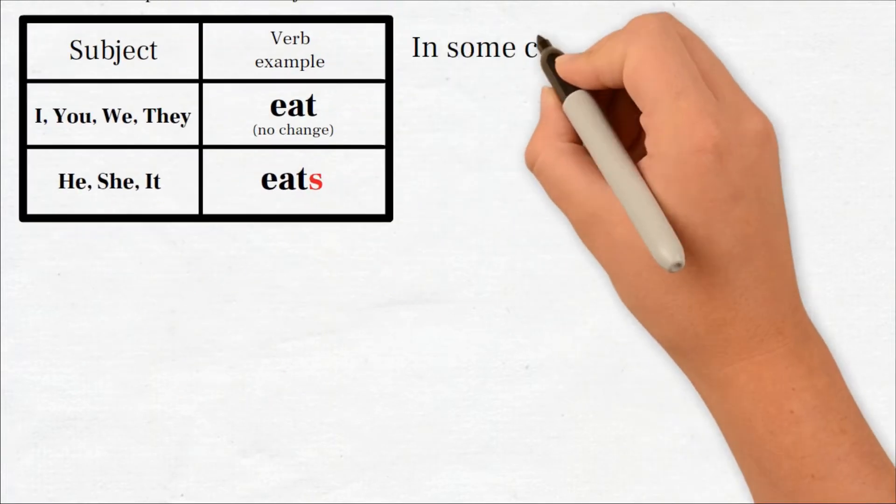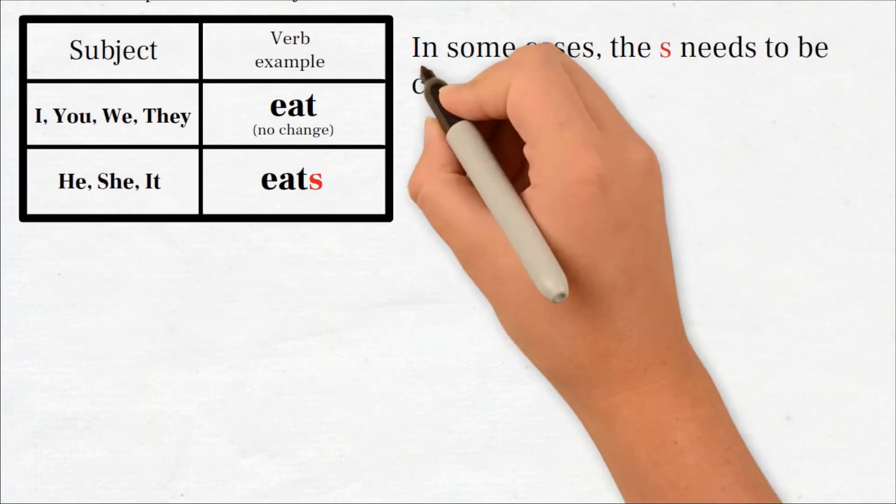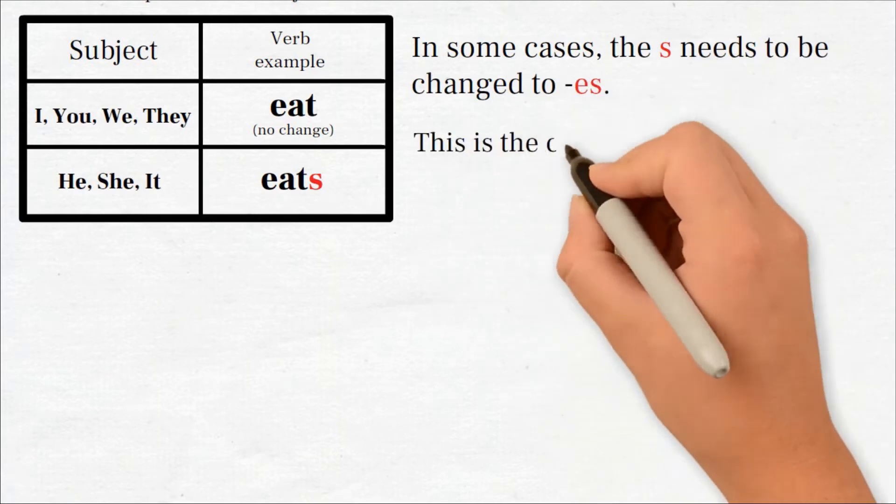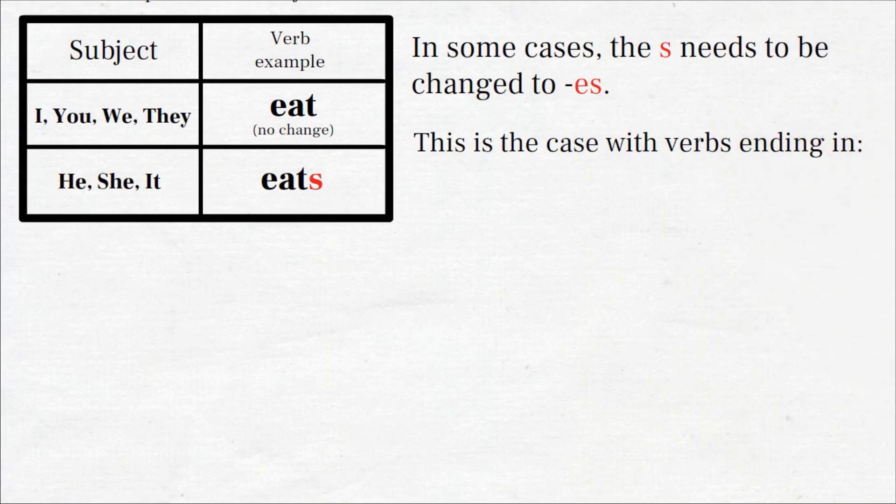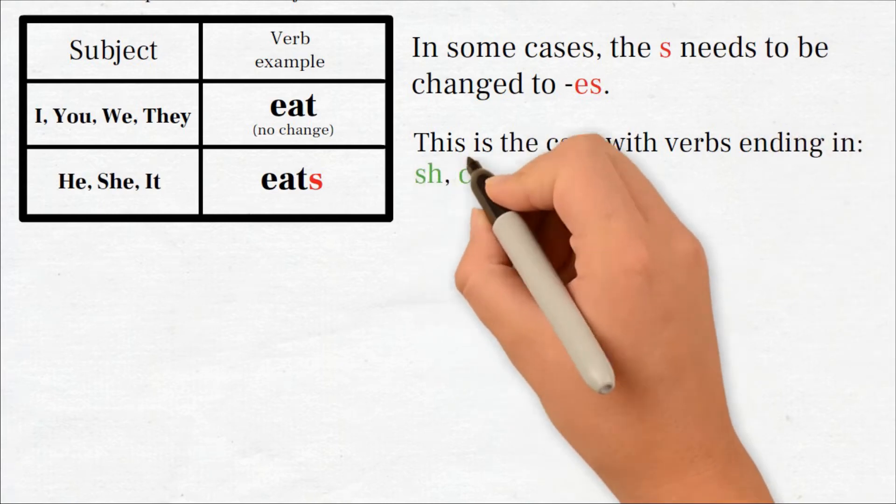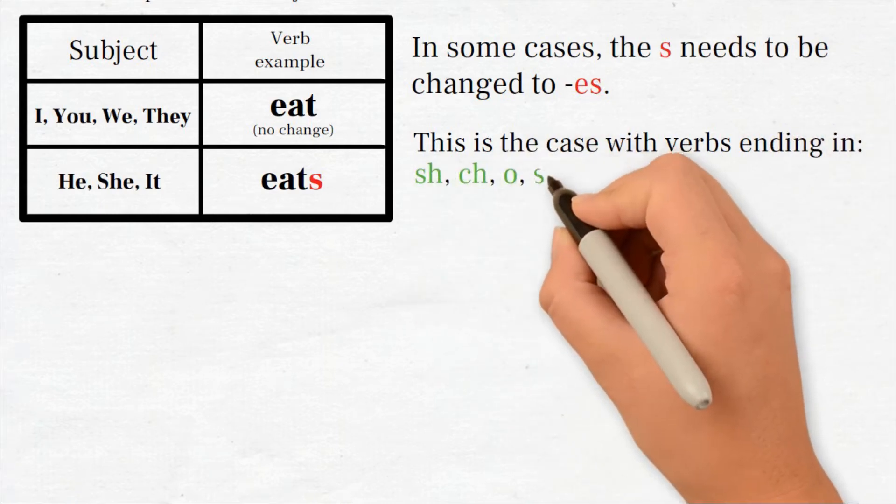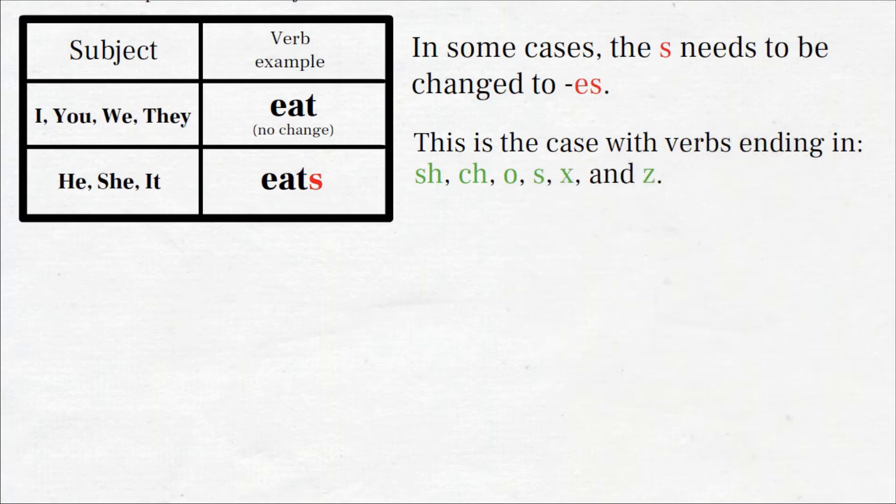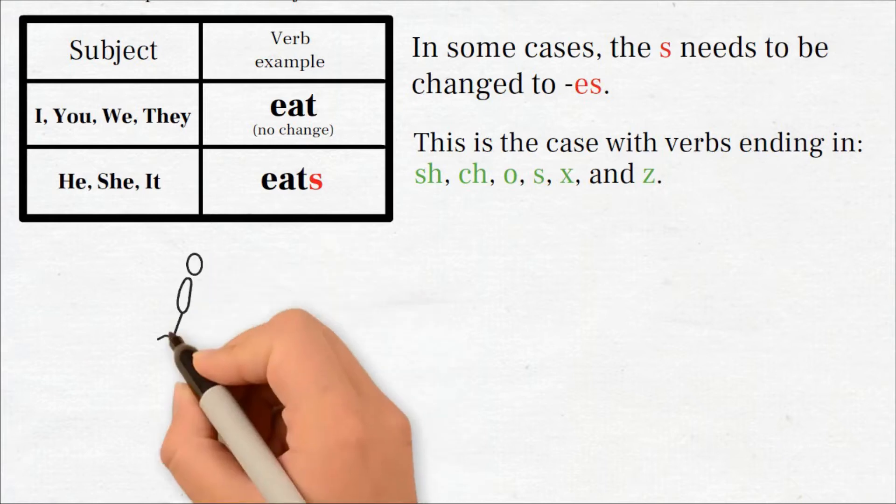In some cases, the s needs to be changed to es. This is the case with verbs ending in sh, ch, o, s, x, and z. Like these.